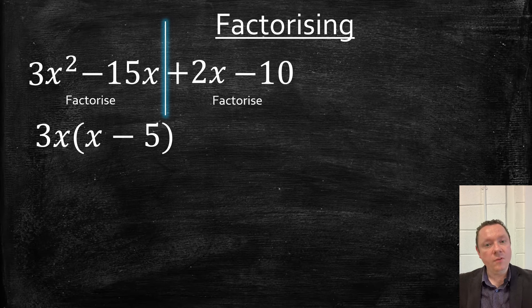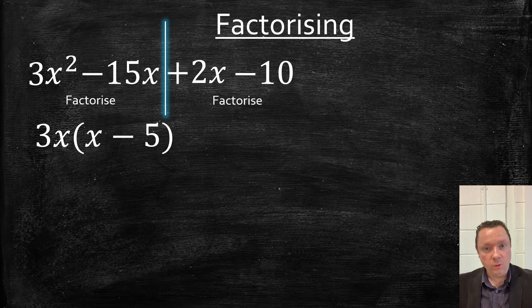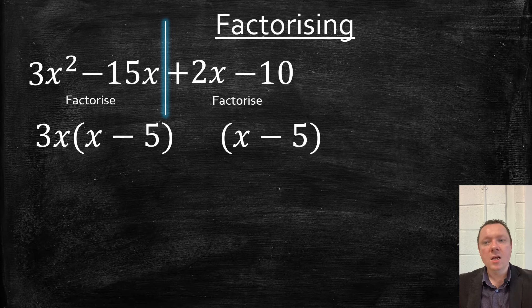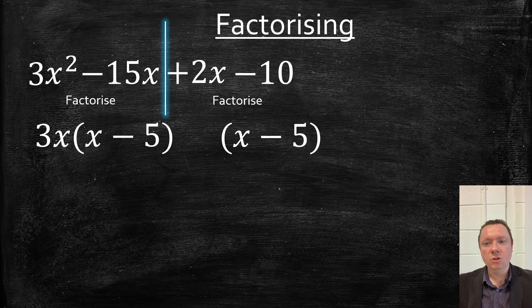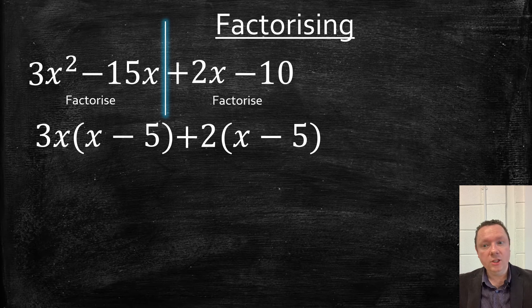And then when we factorize the other side, we just want to make sure that inside our bracket is the same as the first one. So it's going to start with x minus 5. I'm just going to work backwards. Something times x is 2, so it's 2 plus 2. 2 times minus 5 is minus 10. Okay, that's actually now done the question.